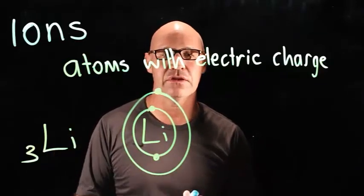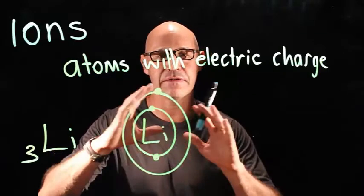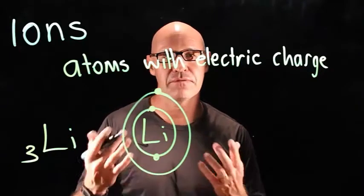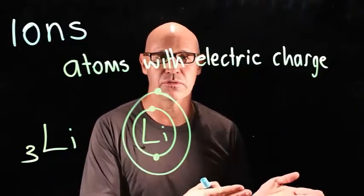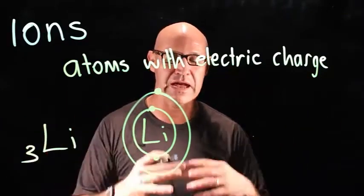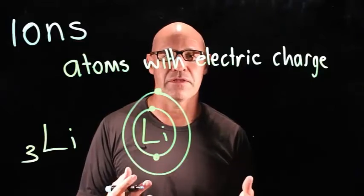Atoms have a tendency to want to have a full outer shell. They either achieve that by donating electrons to another atom or gaining electrons from another atom.